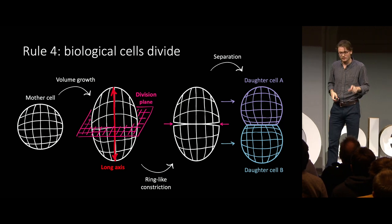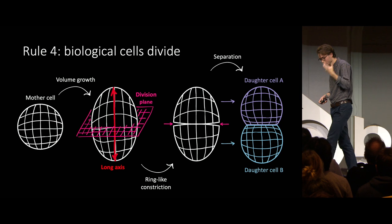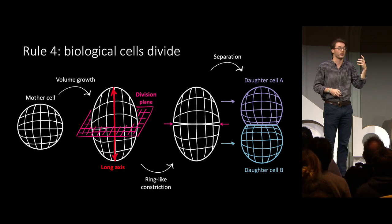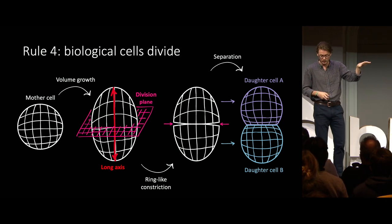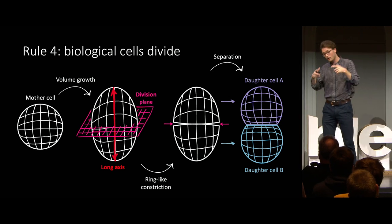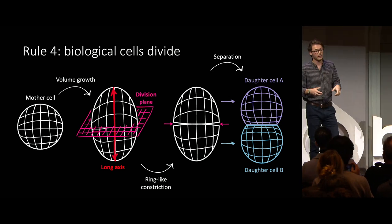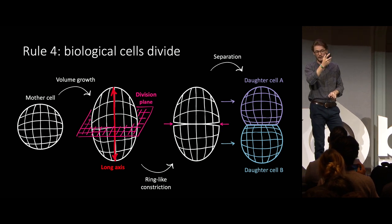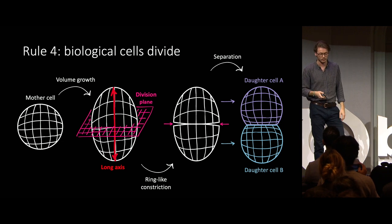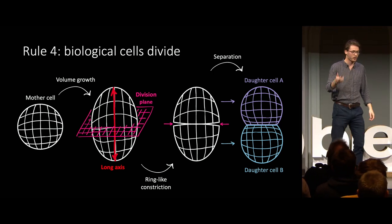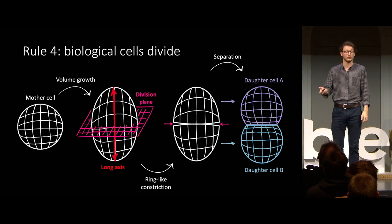We've seen in microscopy movies that cells divide. A really simple model for cell division is the following: a cell grows its volume until it matches a certain target, then a ring pinches the cell surface along a division plane. The division plane is the plane perpendicular to the cell's long axis, passing through the cell's center of mass. Because all of these are meshes, we can do that mathematically — and once the constriction is done, the mother cell has been divided into two distinct daughter cells.